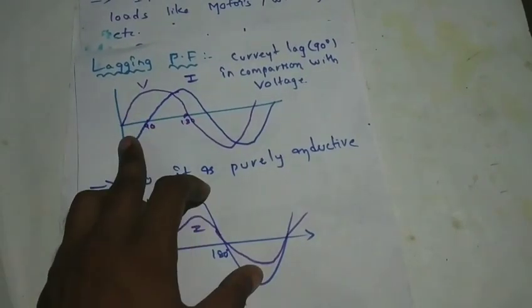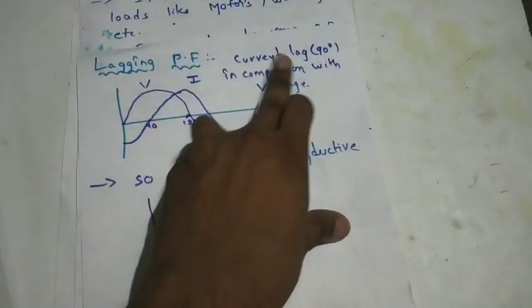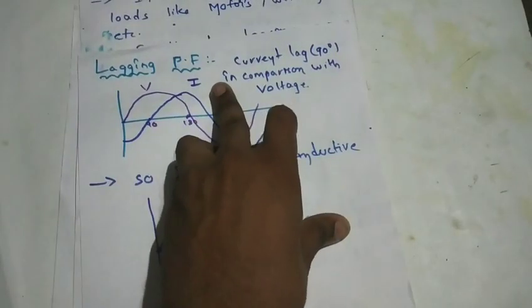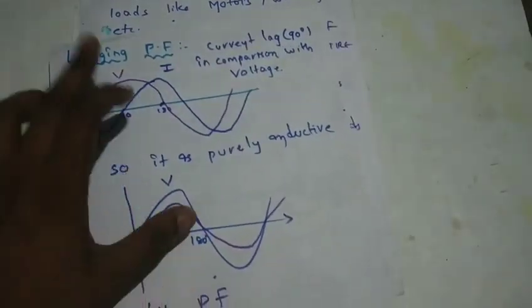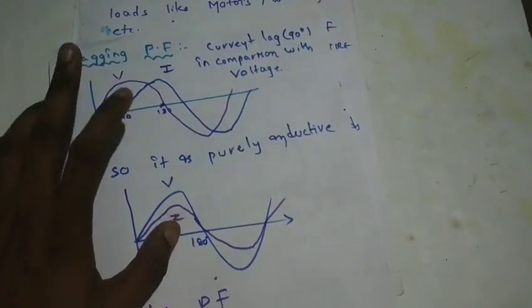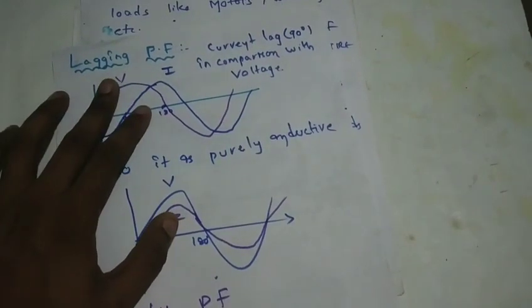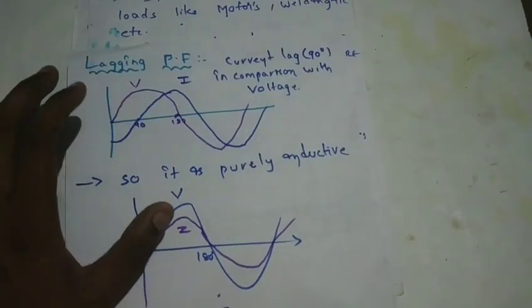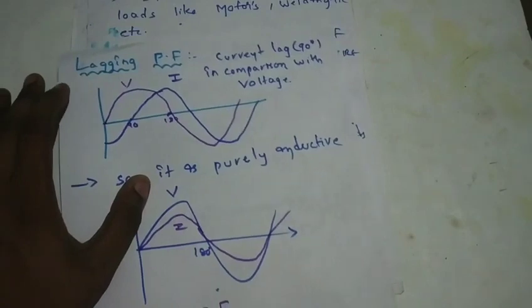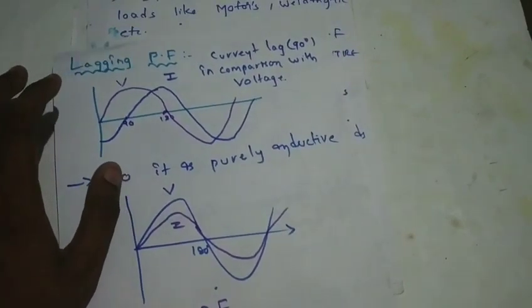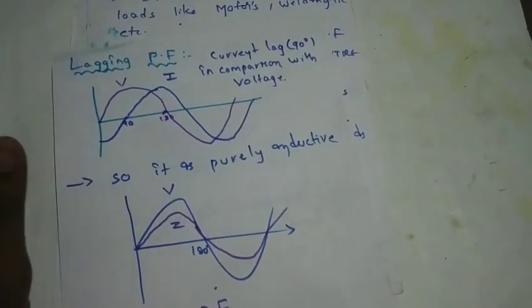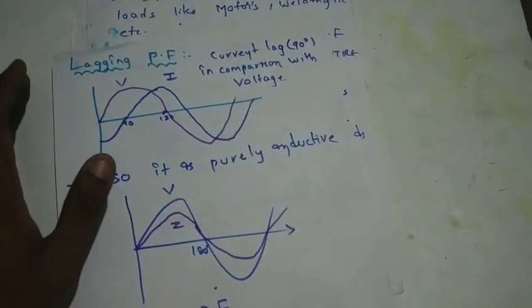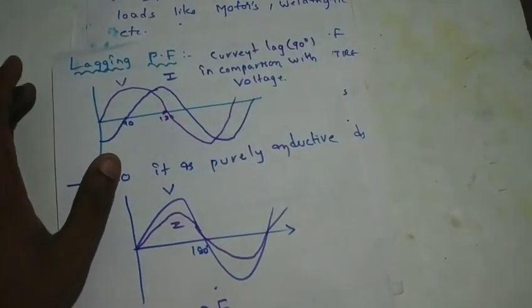When the current is lagging 90 degrees with respect to voltage, the current is lagging. This is lagging power factor. When we have a lagging power factor, it is associated with inductive circuits — inductive load circuits, motors, and arc welding machines.